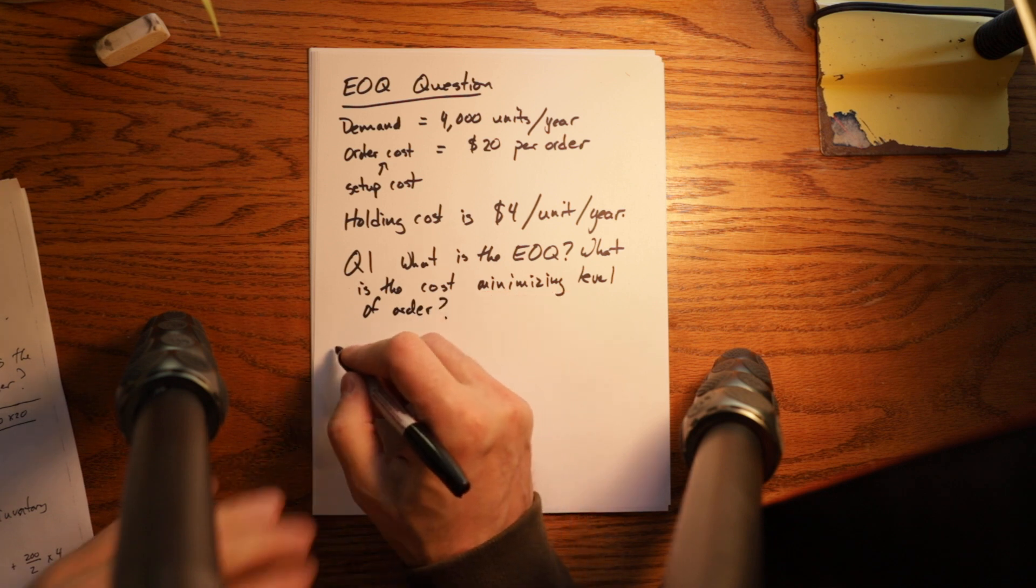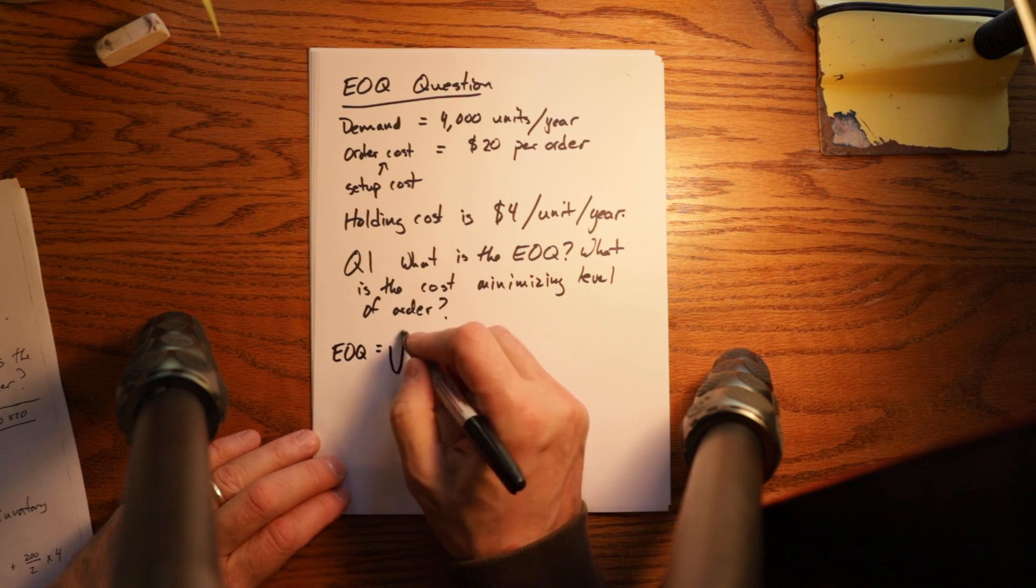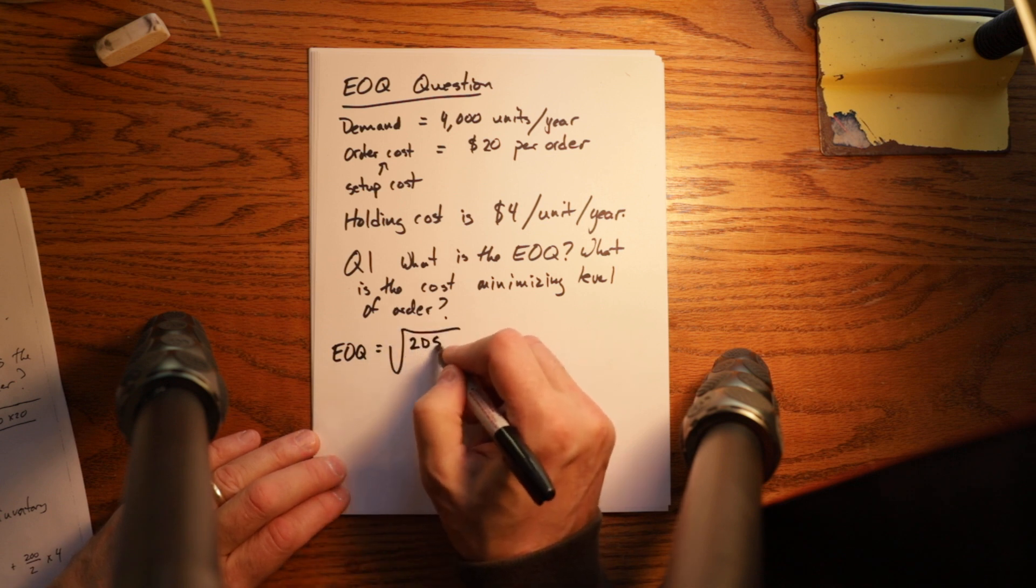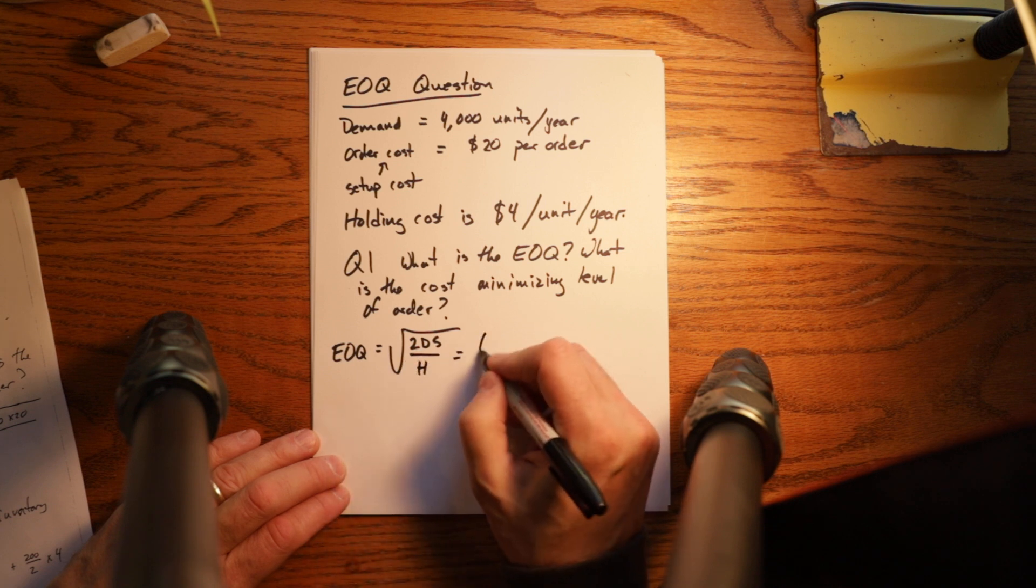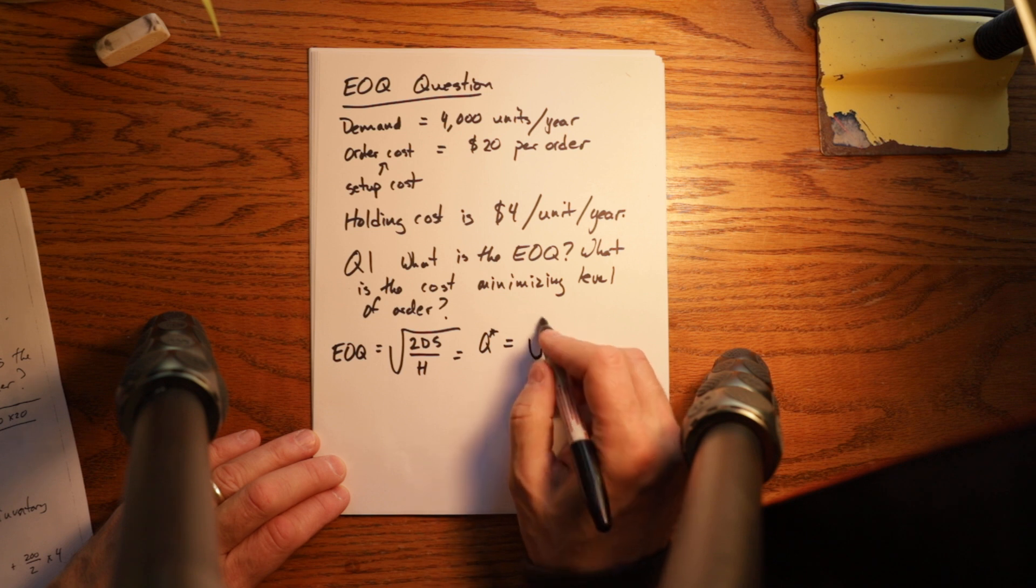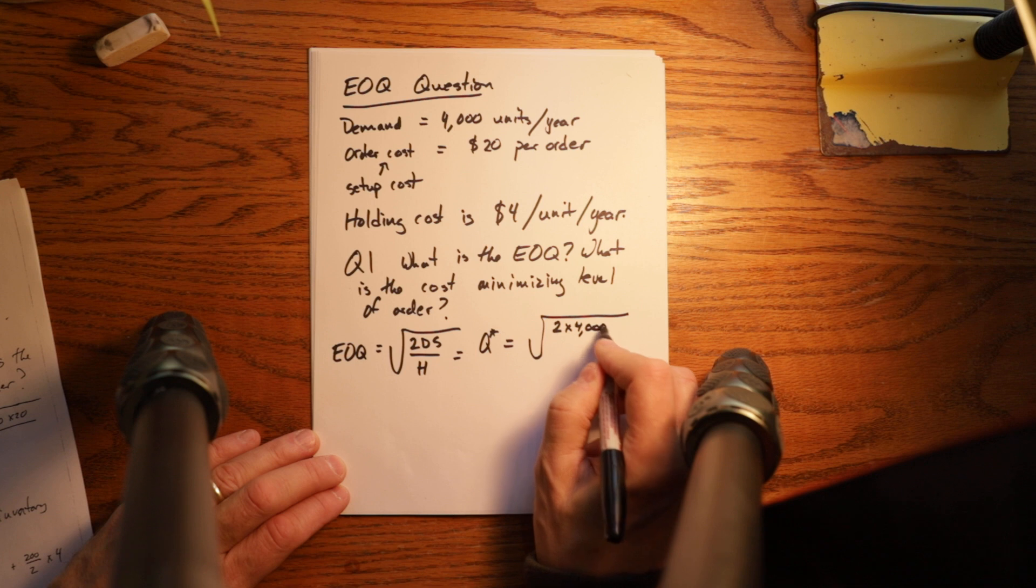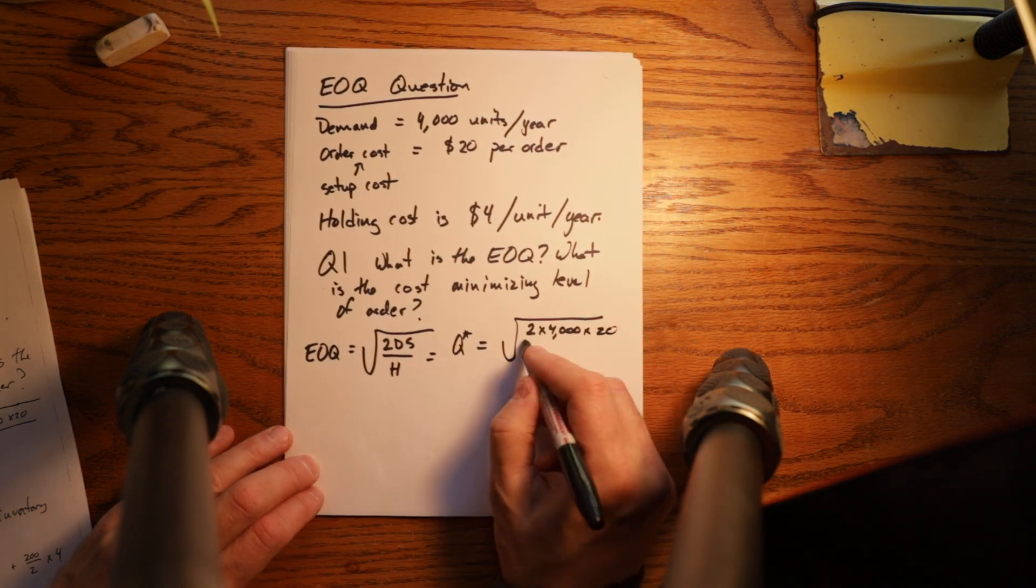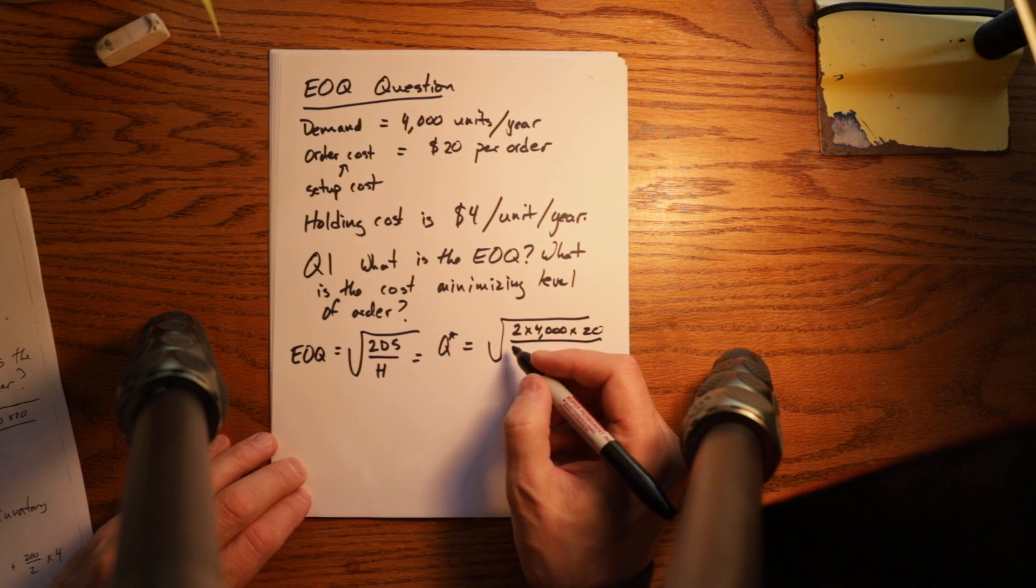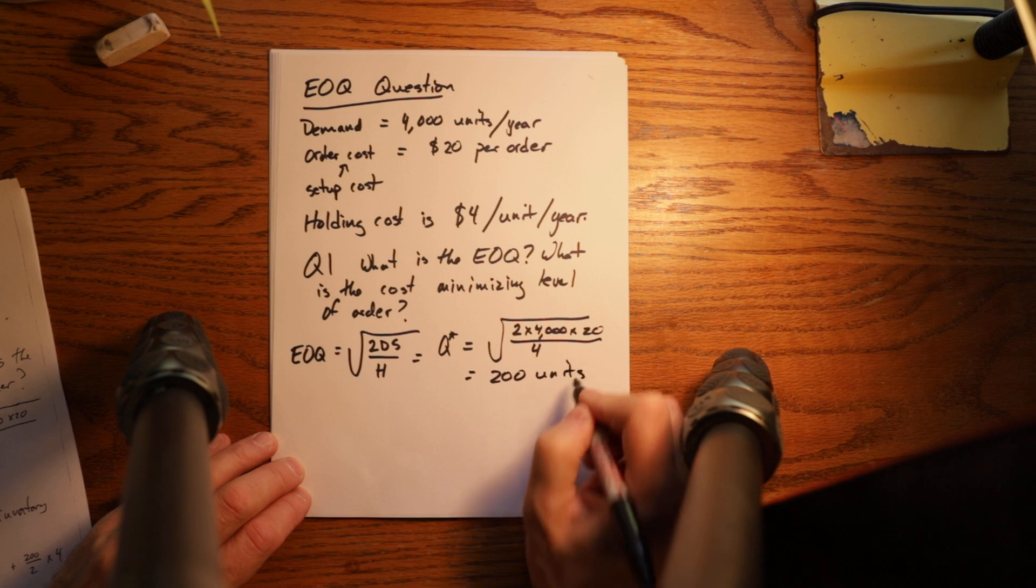And for that, the EOQ formula looks a lot like the POQ formula. It is square root of 2D, capital D which is annual demand, S over H equals Q star, another way of saying optimal. Square root of 2 times 4,000 times 20 divided by 4 is equal to 200 units.